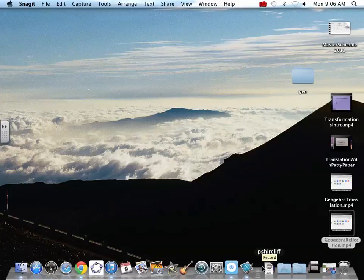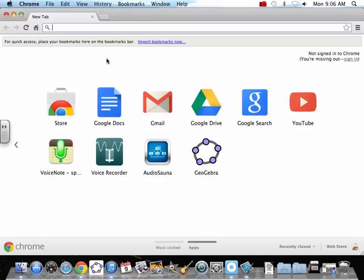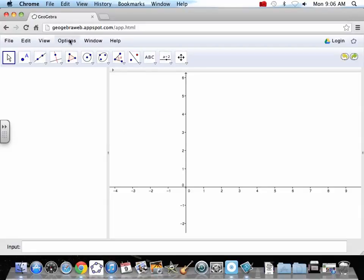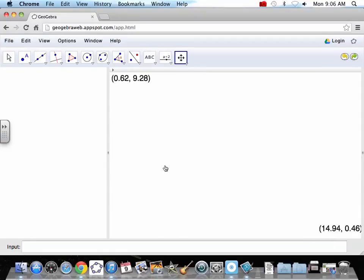So we are now going to do rotation with GeoGebra. Open up Chrome. There's our GeoGebra. Let us get the font size up like we talked about the first time. I'm going to move the grid out of the way. So we want to do rotation.